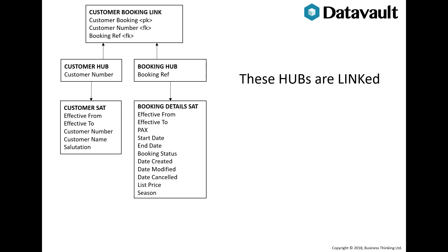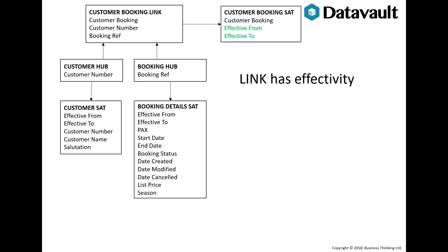We know that customers make bookings — this is a link. Links can only connect to hubs and form a many-to-many link. A customer hub may have a link to many bookings, so a customer may place many bookings and a booking may be placed by many customers. This may be true over time if customers change for a booking. Links have effectivity, so a customer booking may cease or a new customer may take ownership, so we create a new effectivity satellite. This holds effective from and to dates for the link and no other payload.